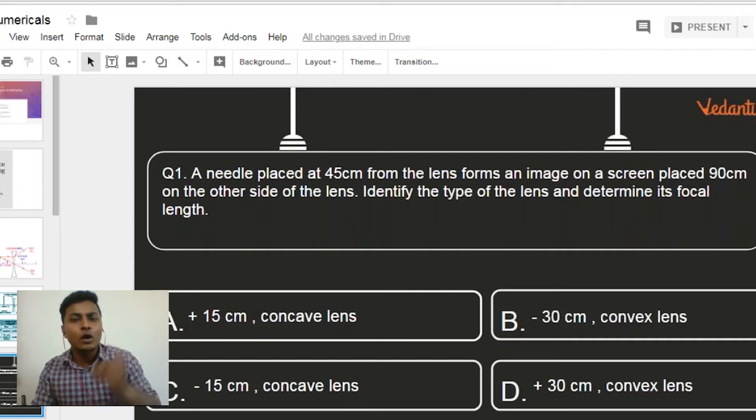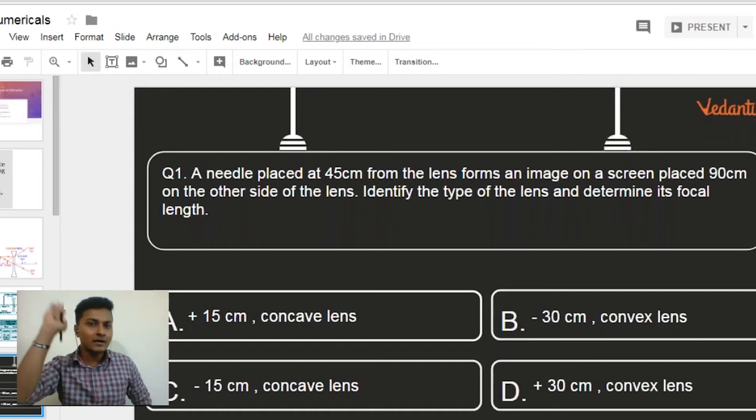I need to find out option B or option D. Now my next question to you Pranav is, the question is identify the type of lens and determine its focal length. You have identified the lens, it's convex lens, you have identified it. They are asking determine the focal length. Now if you see the option, the focal length is given as minus 30 centimeter in option B and plus 30 centimeter in option D, right.